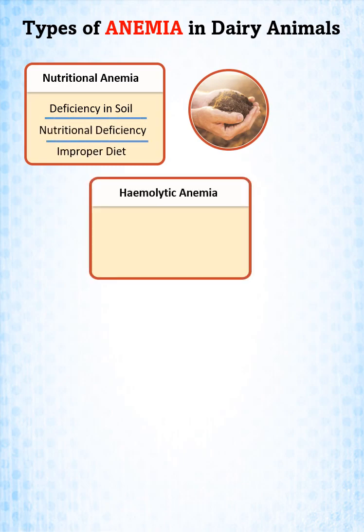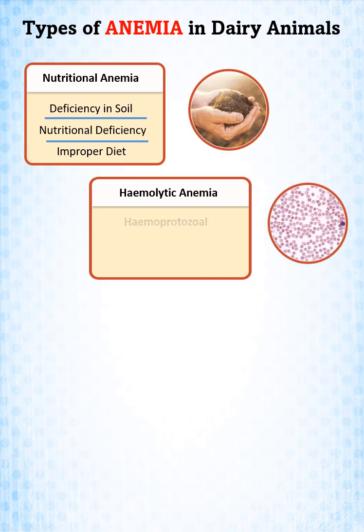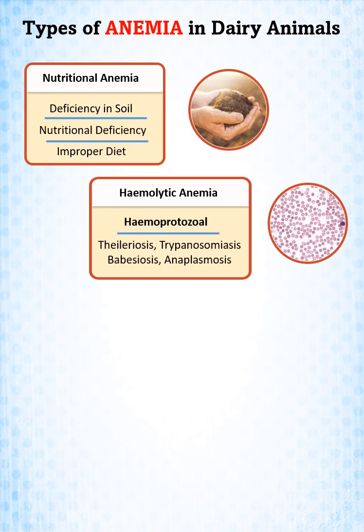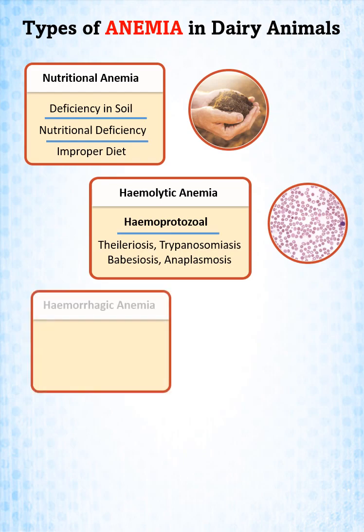Hemolytic anemia is due to hemoprotozoal diseases like theilariosis, trypanosomiasis, babesiosis, and anaplasmosis.